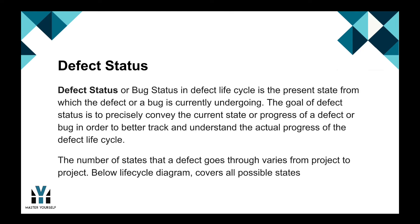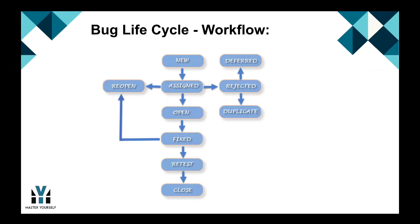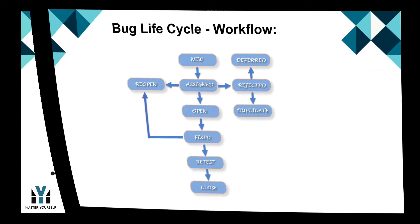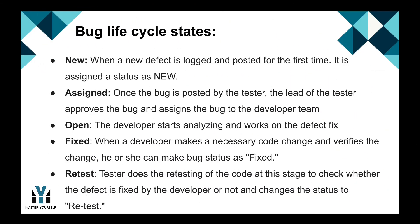There is a lifecycle diagram that covers all possible states. So this is the bug lifecycle workflow. These are the states of the defects: New, Assigned, Open, Fixed, Retest, Closed, Reopen, Deferred, Rejected, and Duplicate. So let's discuss about bug lifecycle states.